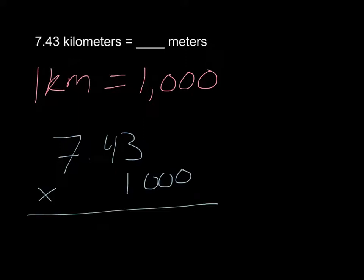And I set my problem up a little bit differently so that I can just drop my zeros because I know that the zeros times 3, 0 times 4, 0 times 7 is going to be 0 still. So I'm going to bring my zeros down, and then 3, 4, and 7. The trick is I have two decimal places here and zero here, so I need to move my decimal two places so that I know that 7 and 43 hundredths of a kilometer is 7,430 meters.